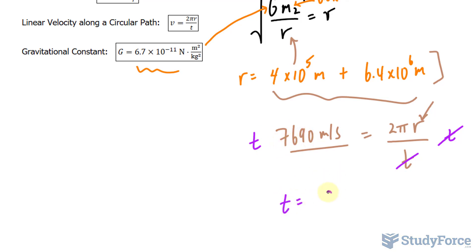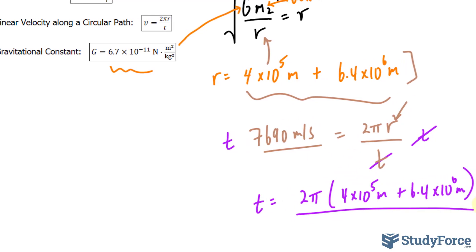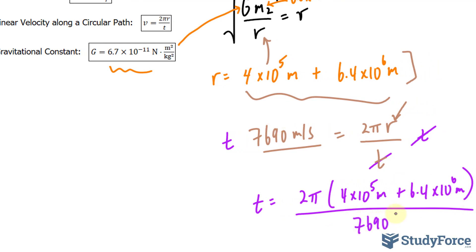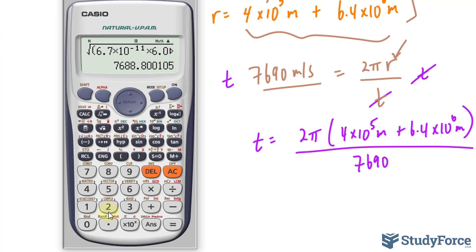So t equals 2π times the sum of those two over 7,690. Let's see what that gives us. 2 times π, and make sure you use the π button on your calculator, times 4 × 10⁵ plus 6.4 × 10⁶, divide that by 7,690. We end up with a period being 5,560.